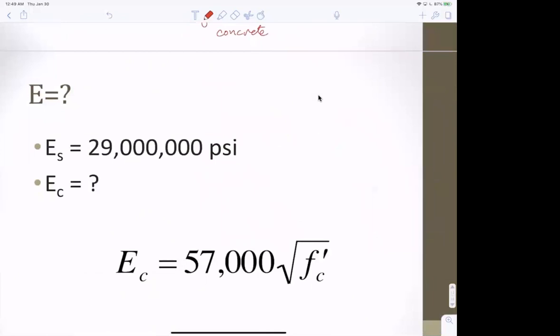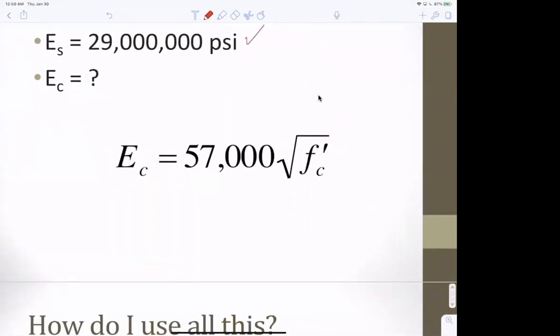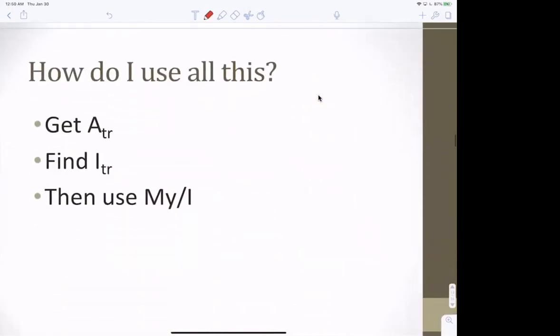Okay. So, what's E? E of steel is always 29 million PSI. E of concrete, you can use this formula. This has to be in PSI, and this will come out in PSI. So, here's a big thing for this class. Whenever you see a square root of f'c in an equation in English units, the f'c is always, always, always in PSI. And the answer is always, always, always in PSI.